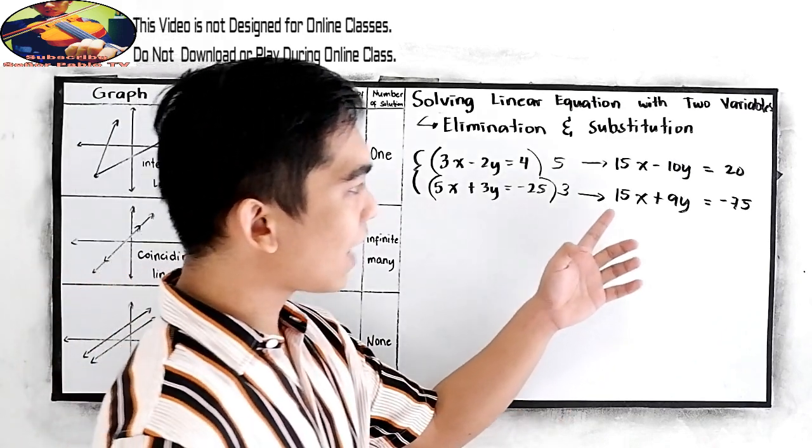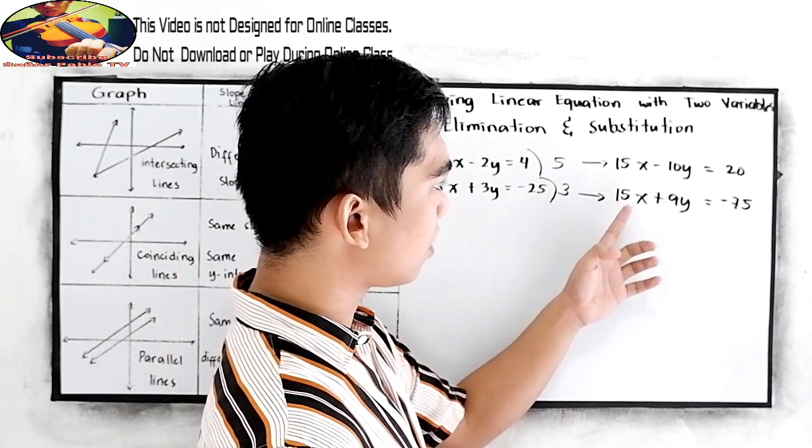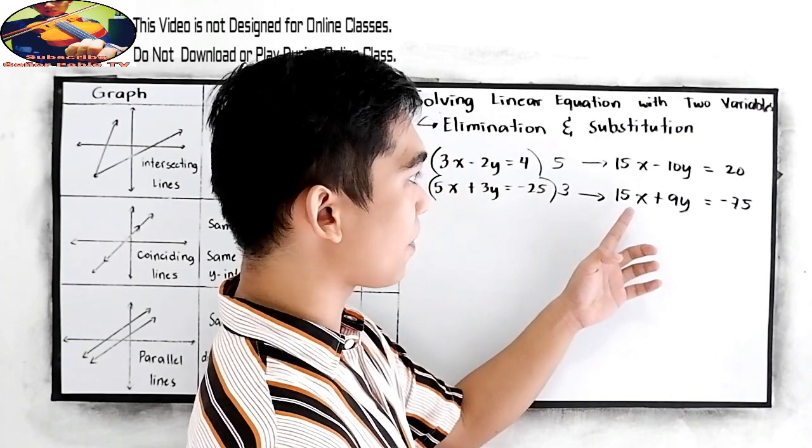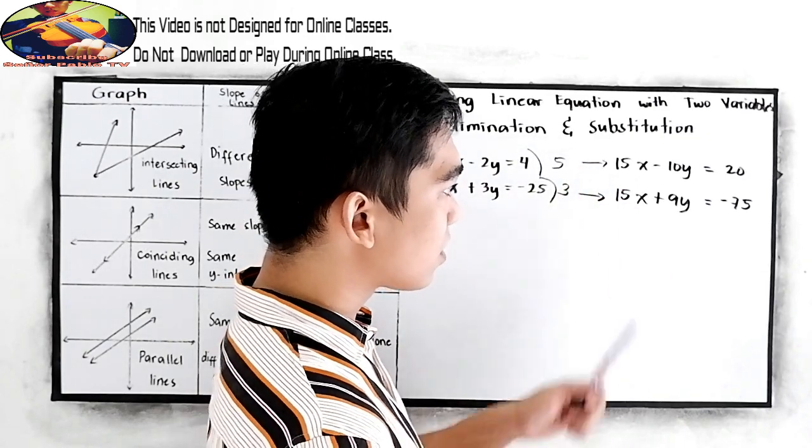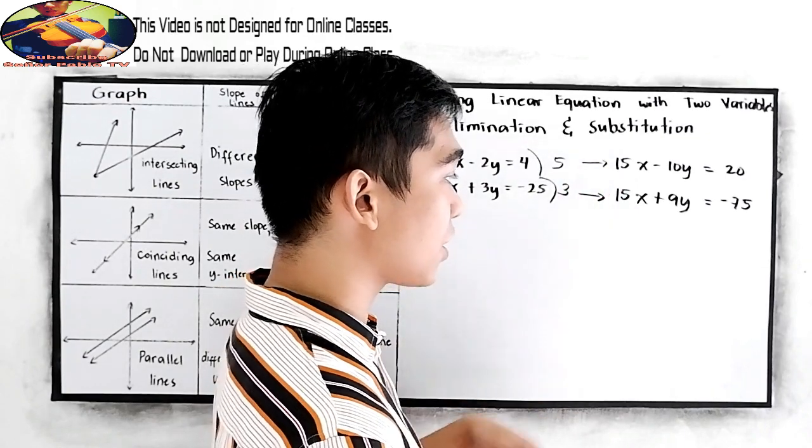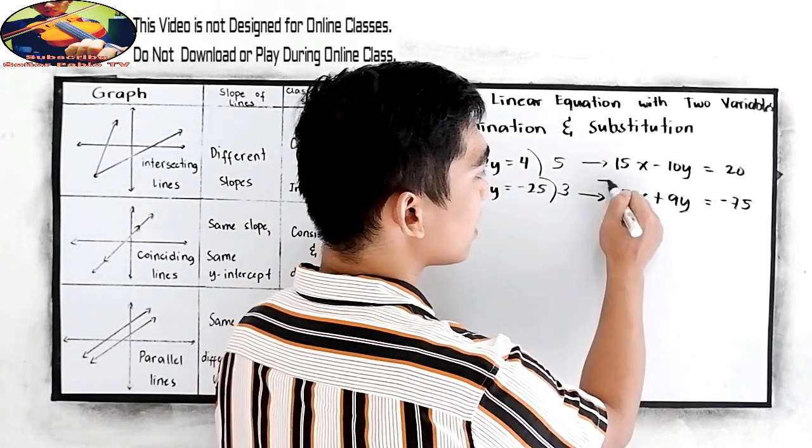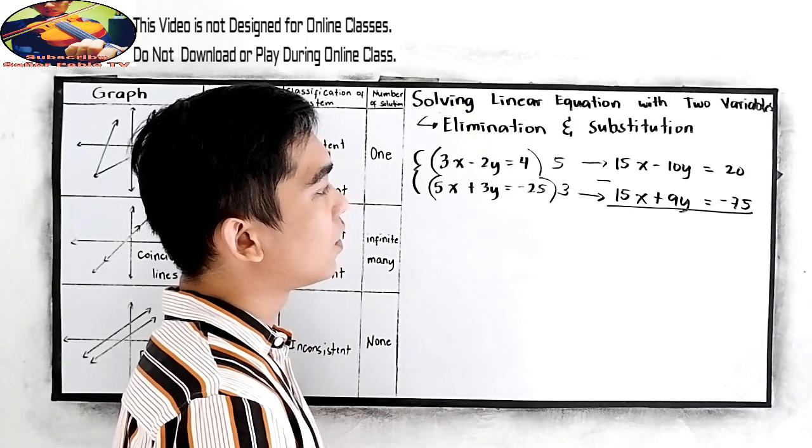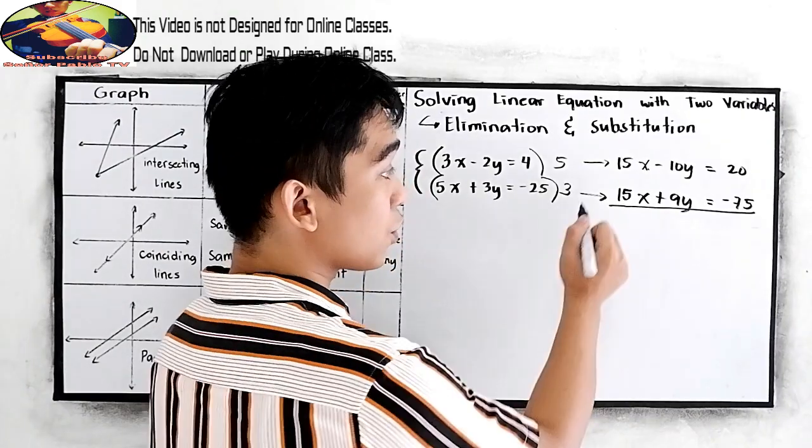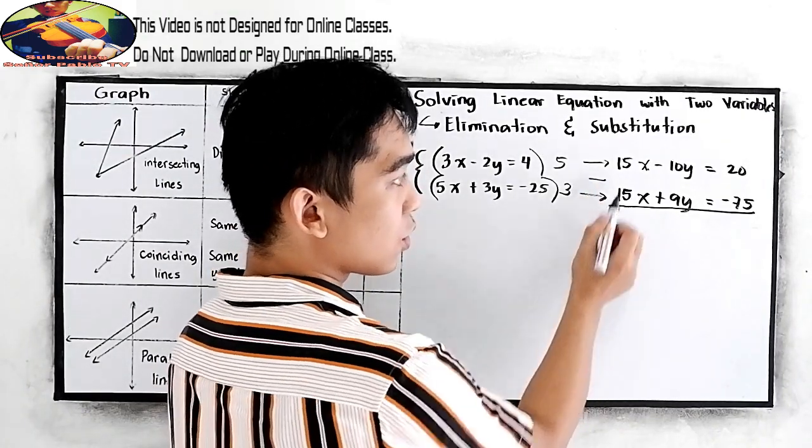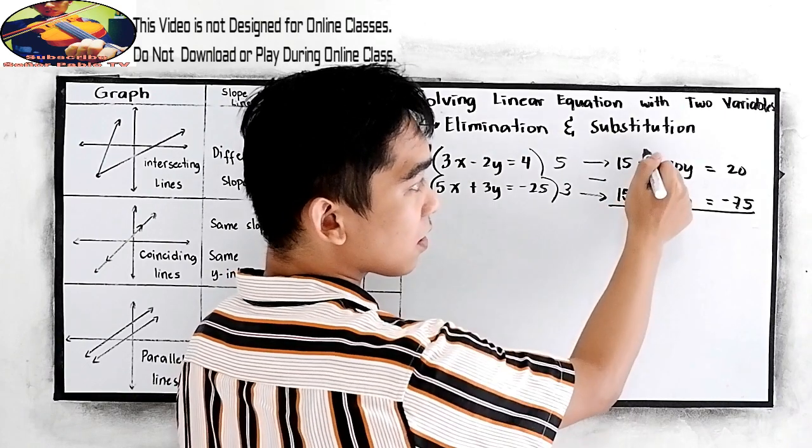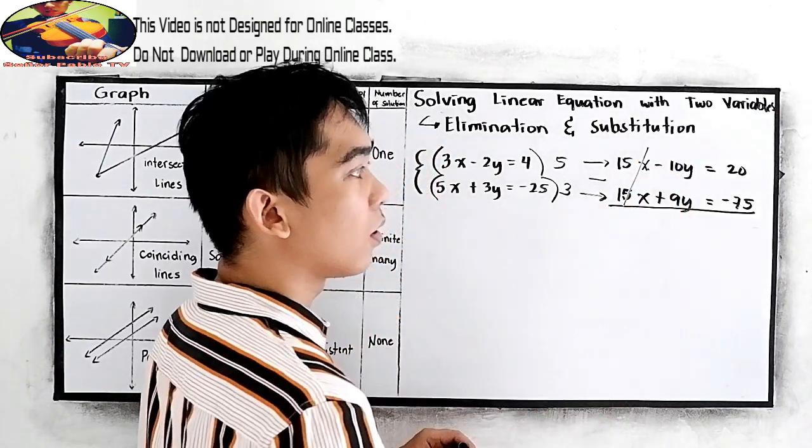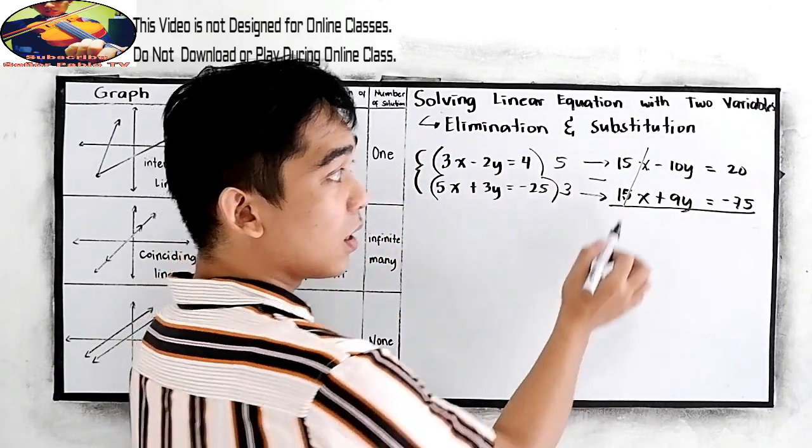Now, study the equations that we produce when multiplying by 5 and 3. So we have now the same coefficient for x, so we can now cancel this. Now, we're going to subtract, so 15x minus 15x will be 0, or we can just cancel now.